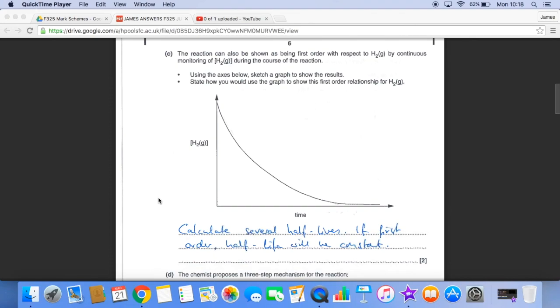First order with respect to hydrogen, and so this time the concentration time graph needs to be a curve like this. And to show that it's first order, you would calculate several half-lives. And if it's first order, the half-life will be constant and that would actually give you this profile of curve.